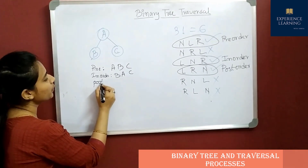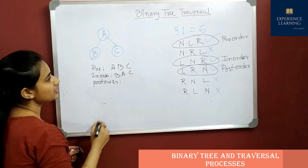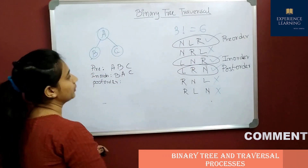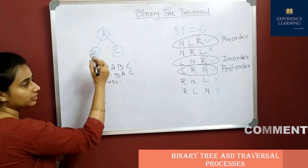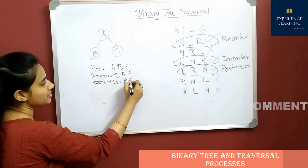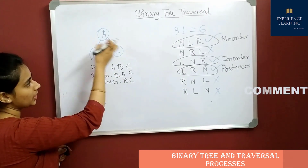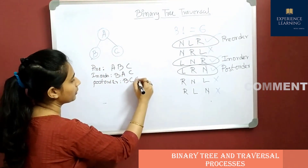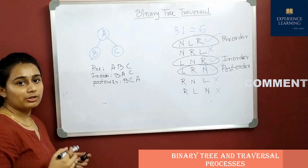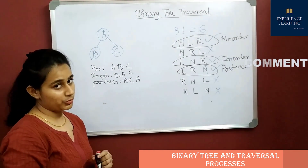For post-order traversal (left, right, then node): we first visit left giving B, then right giving C, and then after traversal of both left and right entirely, we visit the node A. So post-order gives B, C, A. This is the simplest form of traversing a tree using pre-order, in-order, or post-order.